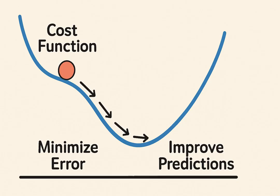Gradient descent is an optimization algorithm used in machine learning. Its job is simple: minimize the error, or cost function. In other words, it helps models improve predictions by adjusting parameters in the right direction.